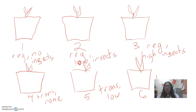Pots four, five, and six will be the same except instead of regular corn, transgenic corn is planted. So pot four has transgenic corn with no insects, pot five has transgenic corn with a low amount of insects, and pot six has transgenic corn with a high infestation of insects.